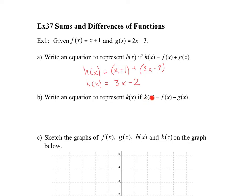Write an equation for k of x if k of x is equal to f minus g. Same thing. So k of x is equal to f, which is x plus 1, minus the original function of g, which is 2x minus 3. A little bit harder here because you have to distribute the negative. So you have x minus 2x, which is negative x, and you have 1 minus minus 3, which is plus 4.